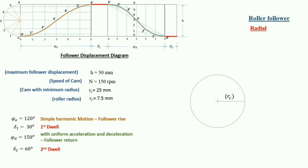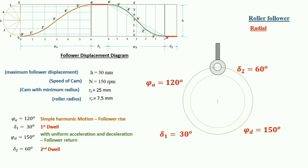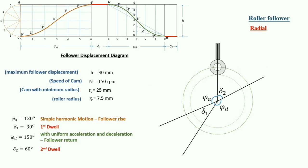Now we draw the base circle with radius RC, then a second circle with radius RC + RR as previously discussed. Since this is a radial follower, the roller follower is placed at the radial position. We divide the circle into the four angle zones: phi A, delta 1, phi D, and delta 2. We then divide phi A into 6 equal parts from 0 to 6, and phi D into 6 equal parts from 6 to 0.